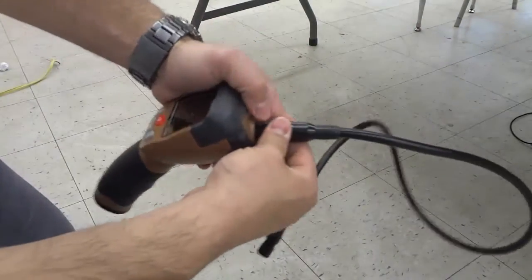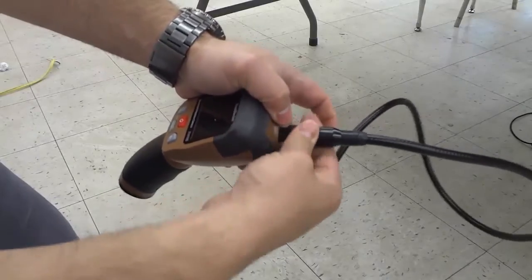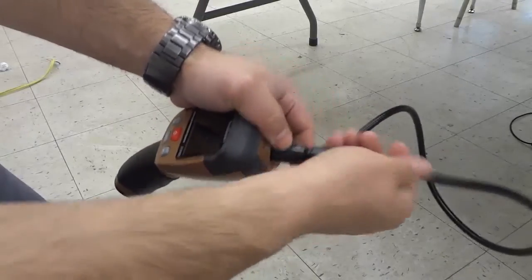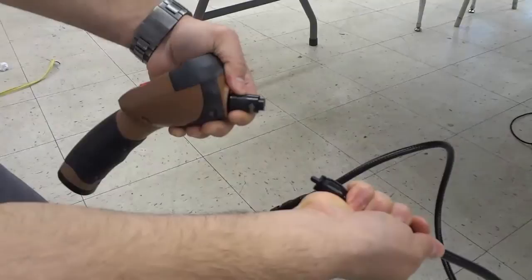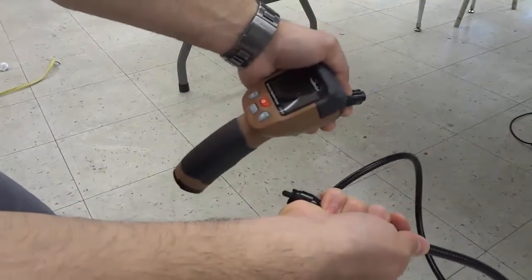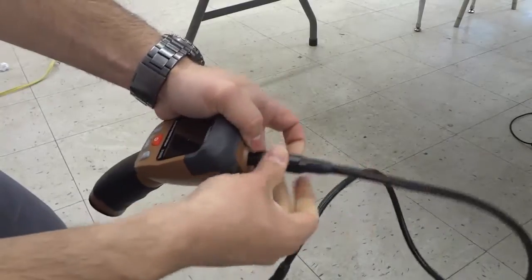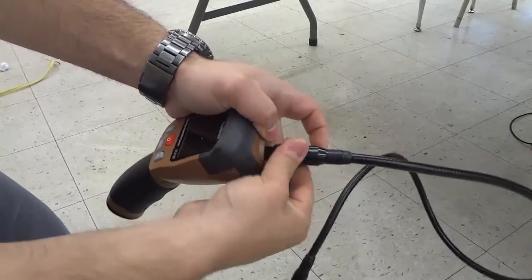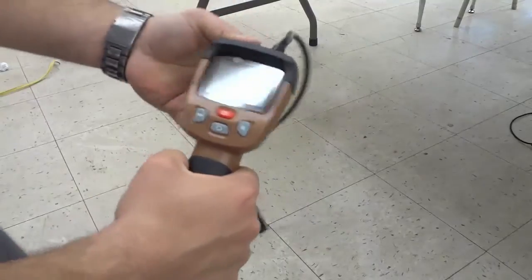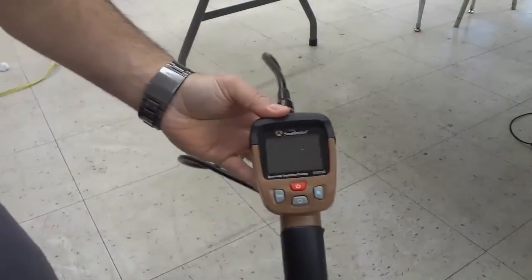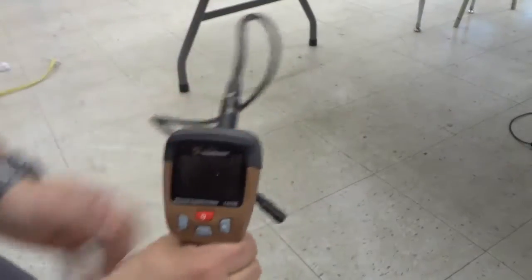Now before I go ahead and show you how to use the tool and turn it on, I do want to show you that if you turn this counterclockwise, you can actually remove the camera just like that. This is very useful for transportation and storage purposes. Then you simply push it back in place and tighten it up. This is a very useful feature in my opinion because you can easily store it or transport it.